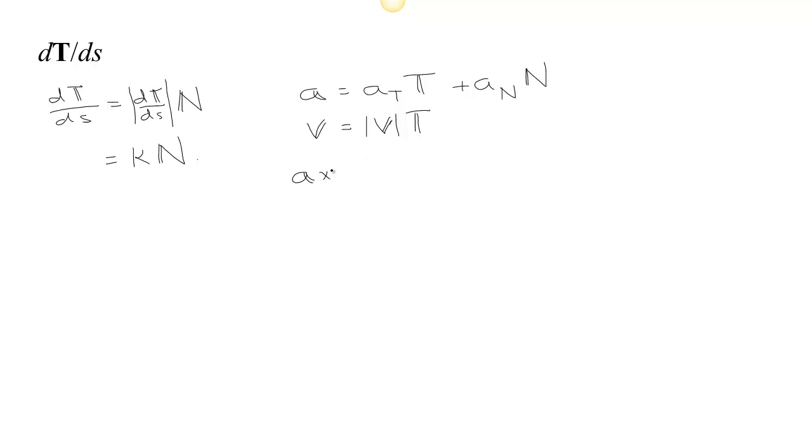So if we look at a cross v, what we get is, if we use our representation here in terms of tangential and normal acceleration, then we have this cross product.